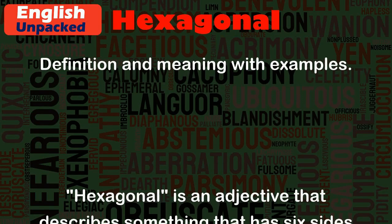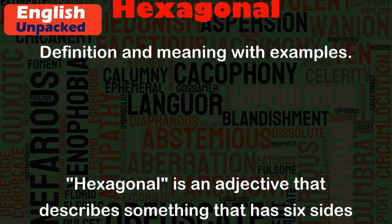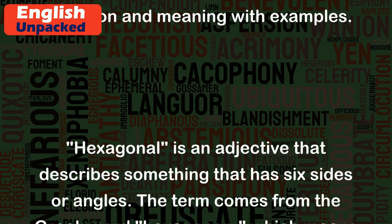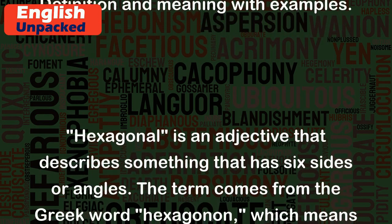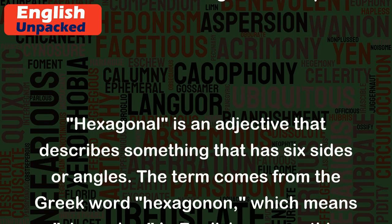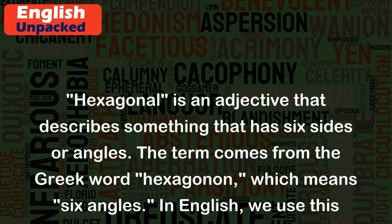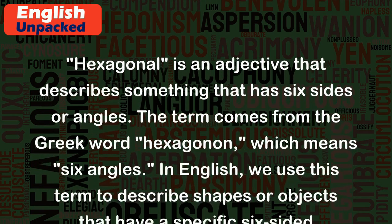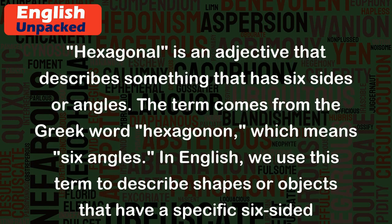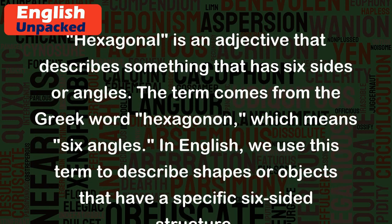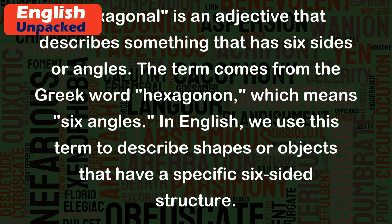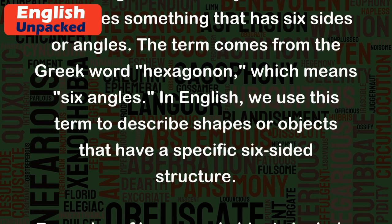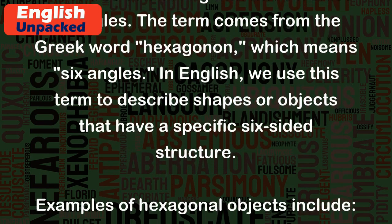Hexagonal is an adjective that describes something that has six sides or angles. The term comes from the Greek word hexagonon, which means six angles. In English, we use this term to describe shapes or objects that have a specific six-sided structure.